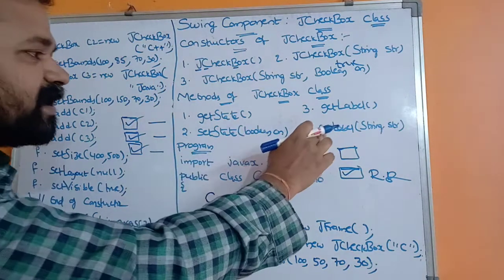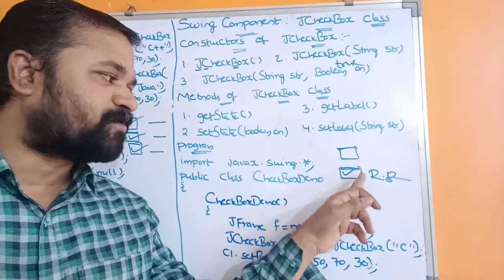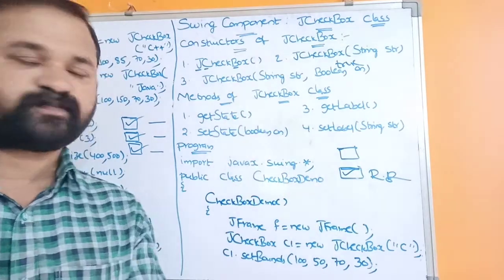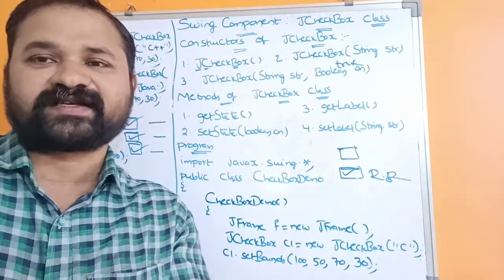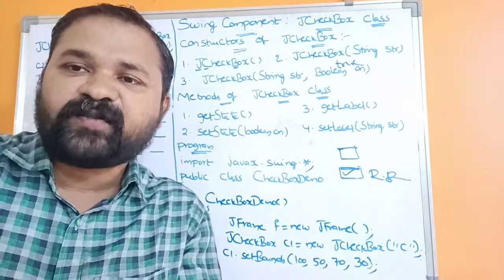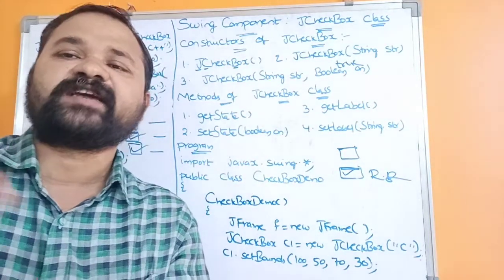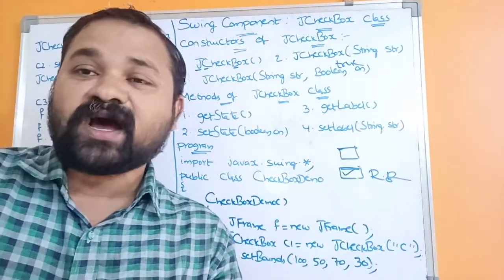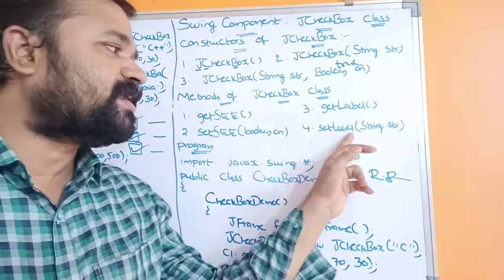Now let's see the methods of the JCheckbox class. There are mainly four methods. The first is getState(), which returns the state of the checkbox — true if checked, false if unchecked. The next is setState(boolean on), which is used to set the state of the checkbox. For example, c.setState(true) will display the checkbox with a tick mark symbol.